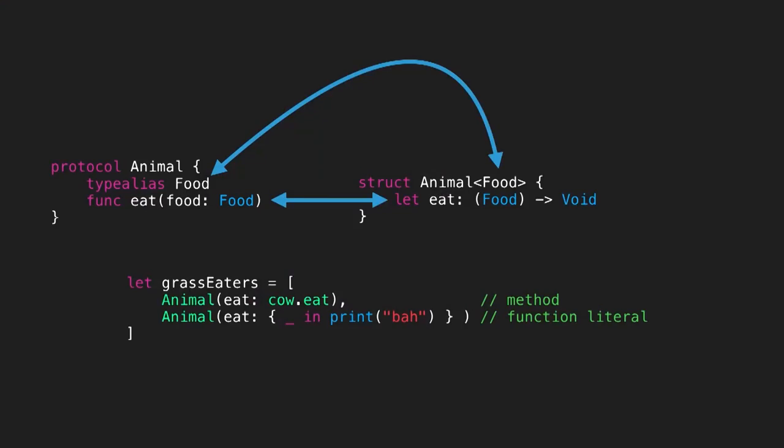It's so mechanical you could imagine the compiler might do it for you. I hope it does someday. But it's so mechanical that maybe it's telling us something much deeper — maybe this protocol and this generic struct are just two versions of the same thing. In fact, we might be able to replace one with the other entirely, rather than just wrap it.